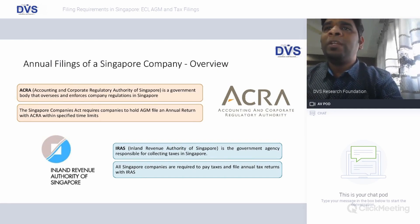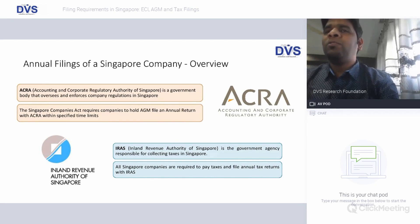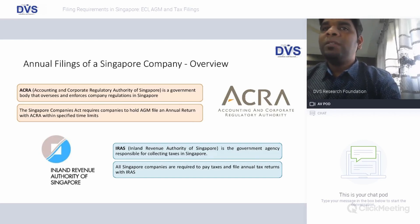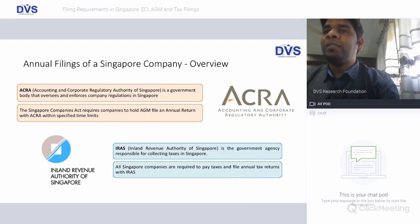ACRA, the Accounting and Corporate Regulatory Authority of Singapore, is a government body that oversees and enforces company regulation in Singapore. As per Singapore's Companies Act, companies are required to hold an AGM and file an annual return with ACRA within specified time limits. Everything can be done online through BizFile using SingPass, which is the login for the company secretary or local director. Similarly, with IRAS, income tax can be filed online and all Singapore companies are required to pay taxes and file annual returns with IRAS within a stipulated period.